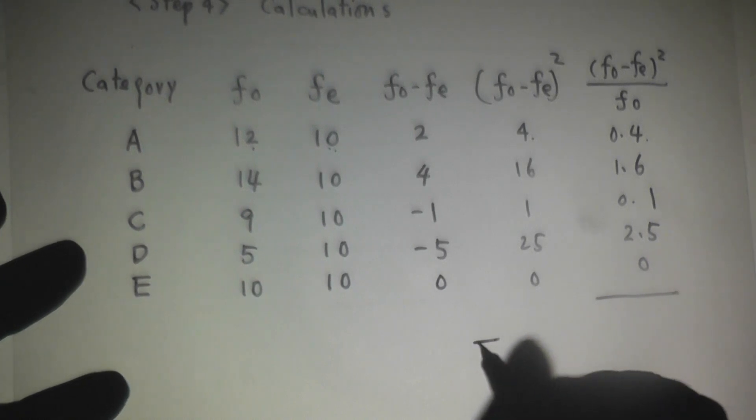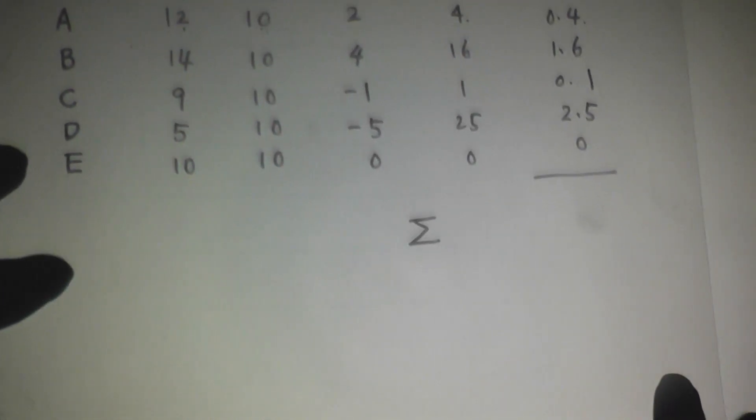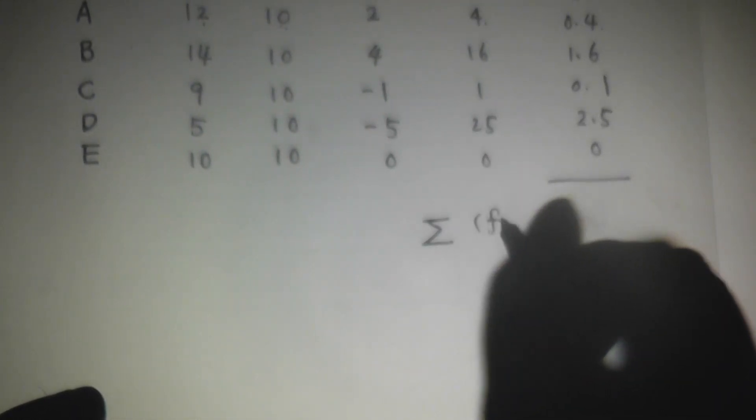So when we add it up, summation FO minus FE squared over FO, this number: 0.4 plus 1.6 is 2, plus 0.1 is 2.1, plus 2.5 is 4.6, plus 0 is still 4.6. Is this number too big or too small? Well, let's see.